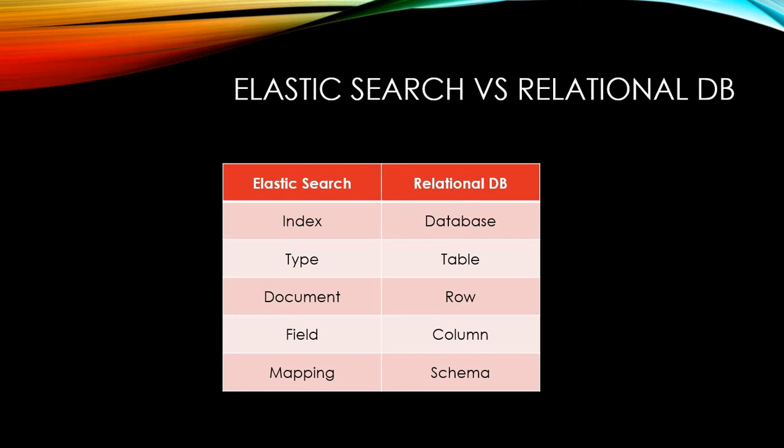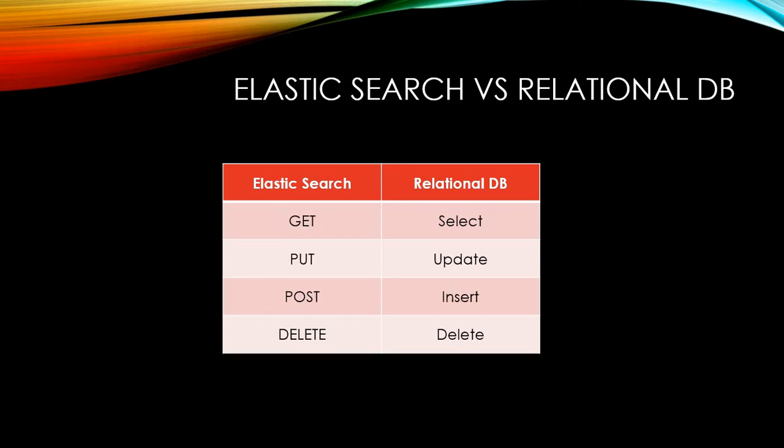If you are familiar with relational databases, here is the comparison table. An index is equivalent to a database, a type is a table, a document is a row, a field is a column, and a mapping is a schema.